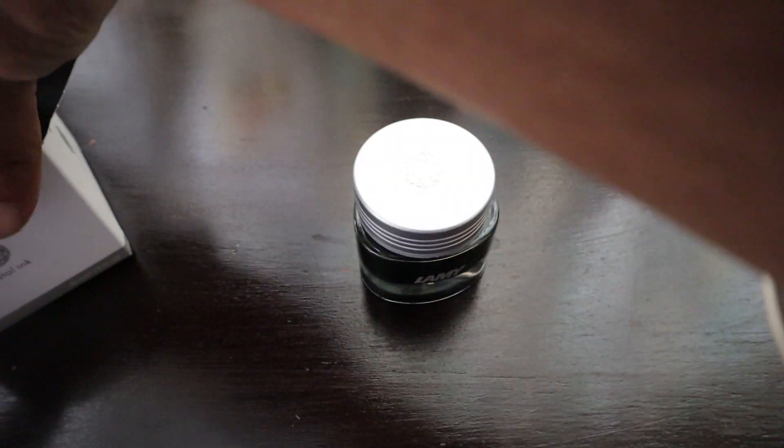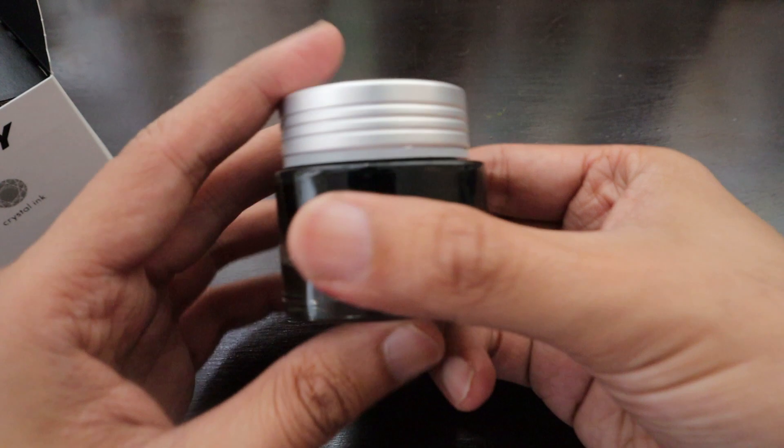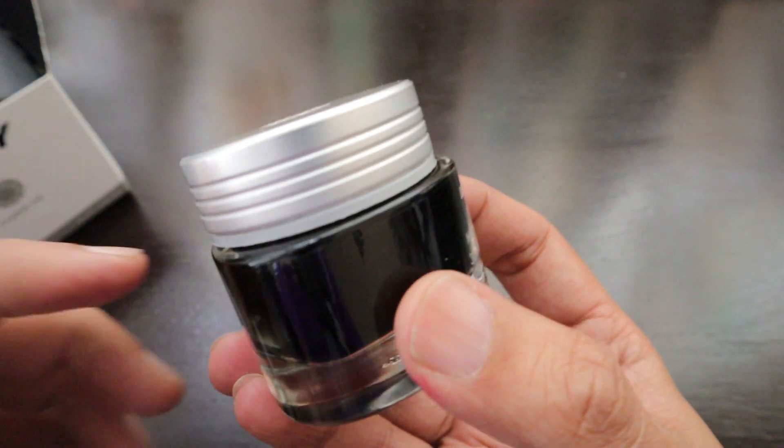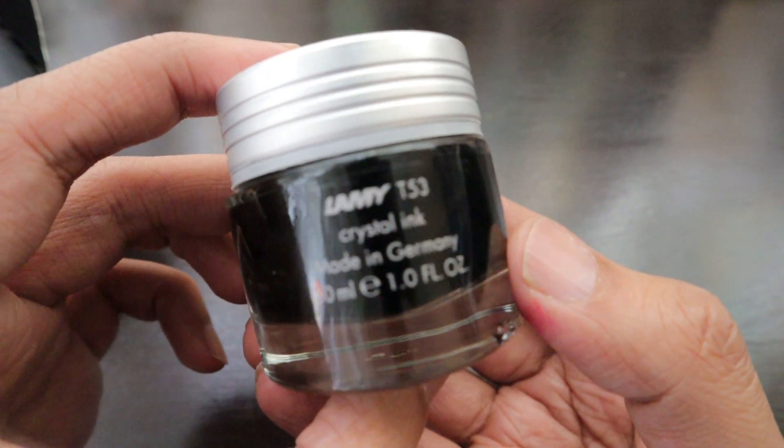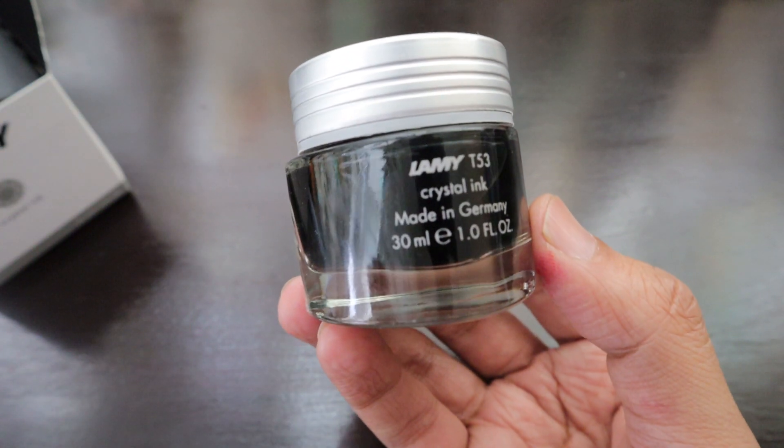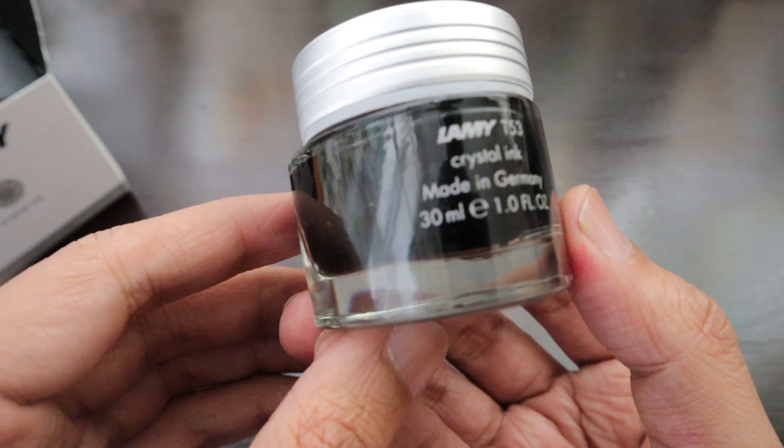This is the Lamy T53 Crystal Ink bottle. These inks definitely have some kind of shimmer or sheen compared to the other inks. It's a T53 Crystal Ink, made in Germany, 30ml bottle.